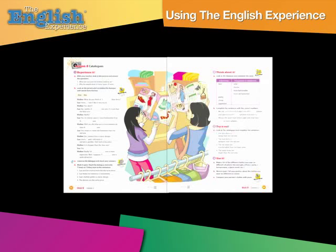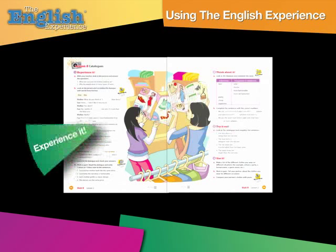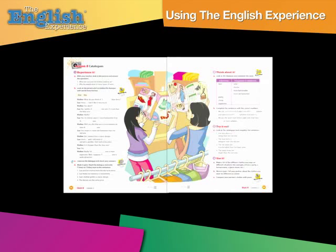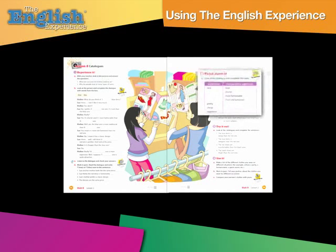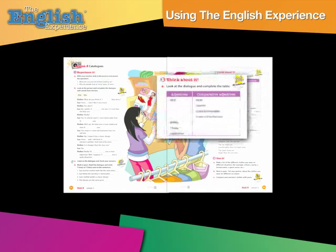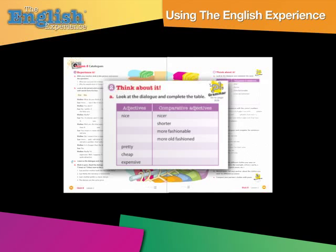Pre-reading or pre-listening activities, as well as text work activities, are always covered in section one, 'Experience It.' The next part of the lesson is called 'Think About It.' This is the stage when we ask students to reflect on their experience of the text. This means looking back at the text and focusing on a specific language item.